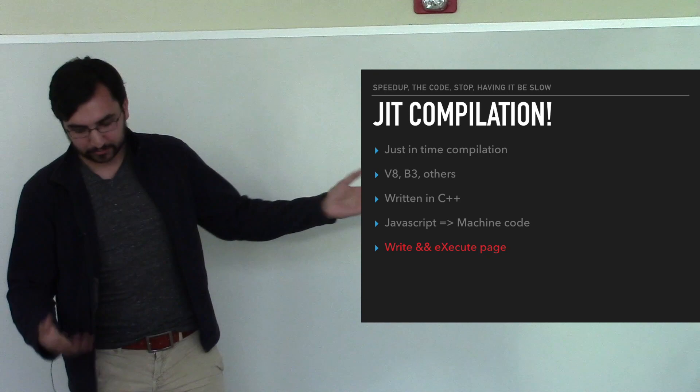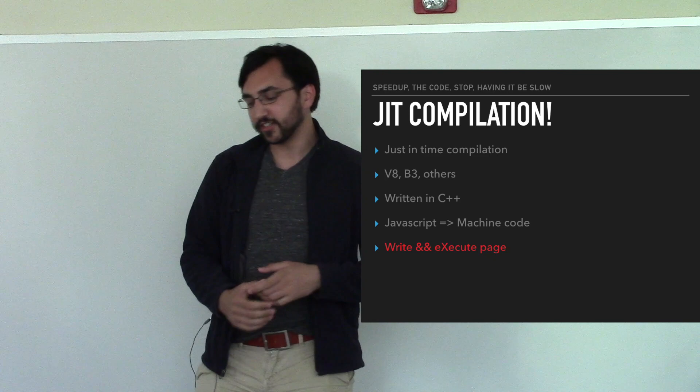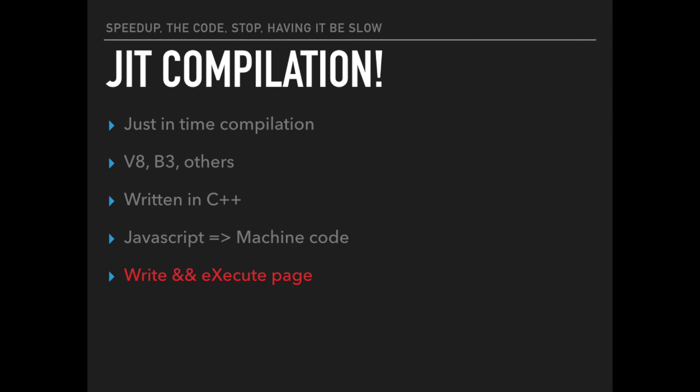Sometimes the browser sees an opportunity to do this, especially when a function is in a while loop — it thinks 'that's going to run a bunch of times, we'll compile it so it runs way faster.' That is called JIT compilation, or just-in-time compilation, because we're doing it on the fly, just in time for the code to be executed.